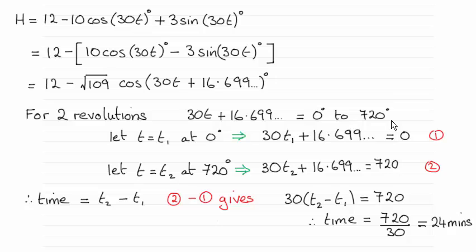And so I said well okay let's suppose that at some particular time t1 it's at naught degrees. So I substituted t equals t1 into here and equated it to 0. So I called that equation 1.